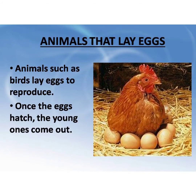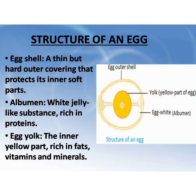Animals that lay eggs: Animals such as birds lay eggs to reproduce. Once the eggs hatch, the young ones come out. The structure of an egg has, first, an egg shell — a thin but hard outer covering that protects its inner soft parts.